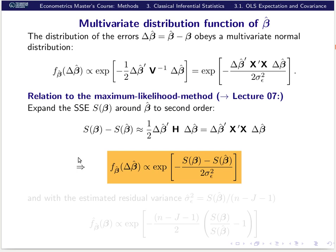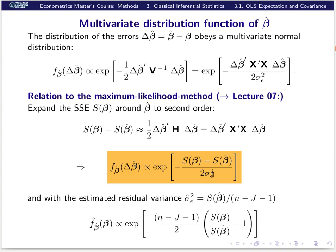Of course, delta-beta equals beta minus hat-beta. Finally, if we want to calculate this — because the true sigma² is unknown — we can insert the residual variance estimator hat-sigma², which is also the minimum sum of squared errors divided by the number of degrees of freedom. If we insert this and replace the denominator by the estimator, we come to a form that can be calculated from the data. This is no longer Gaussian distributed because of hat-beta in the denominator, but it is similar to a Gaussian distribution.